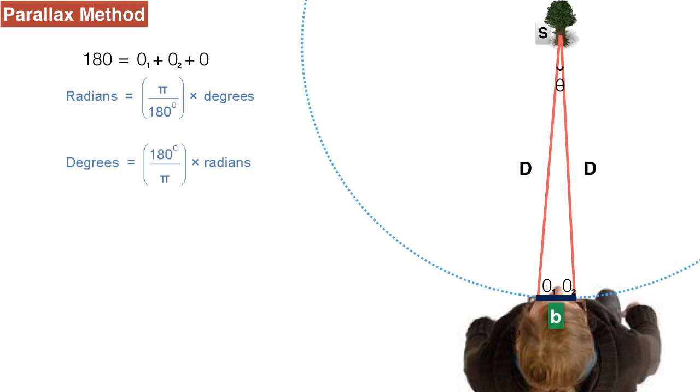Now the relation between arc b, parallax angle theta, and radius D is given as parallax angle equals arc upon radius. To understand this relation you can refer to my previous video on plane angle and solid angle.